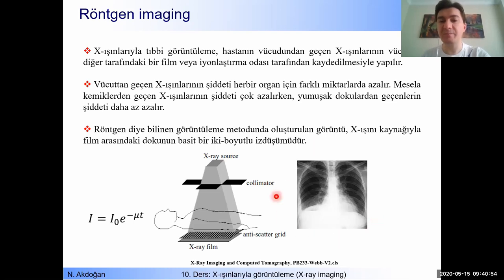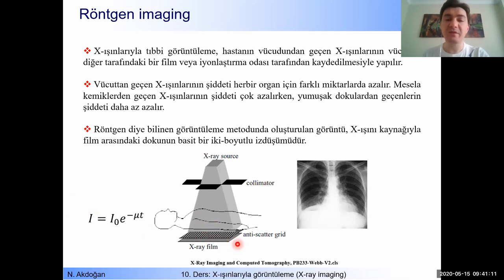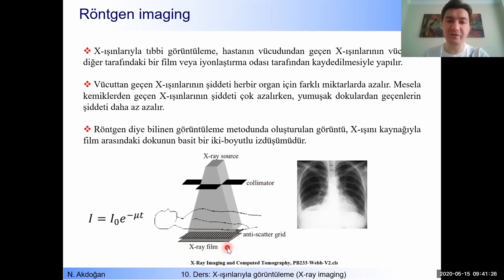This is a Röntgen image of a chest of a patient. As a detector, in order to detect the intensities of transmitted x-rays, x-ray films are normally used. Recently, digital detectors have started to be used instead of photographic film. This is the basic principle of x-ray imaging or Röntgen imaging.